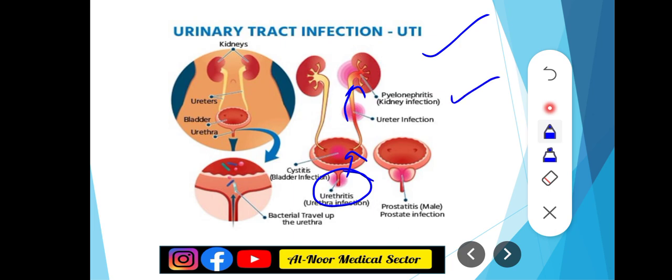اگر bacteria kidneys میں چلا جاتا ہے اور infection کر دیتا ہے اسے pyelonephritis کہتے ہیں۔ اگر antibiotics دینے کے باوجود بھی treat نہیں ہو رہا، تو patient کو kidney کے اندر abscess بن جاتی ہے جسے perinephric abscess کہتے ہیں۔ اس میں symptoms relief نہیں ہوتی اور drainage کروانا پڑتا ہے۔ UTI میں urethritis، cystitis، pyelonephritis، perinephric abscess شامل ہیں۔ Males میں prostate infection کو prostitis کہتے ہیں۔